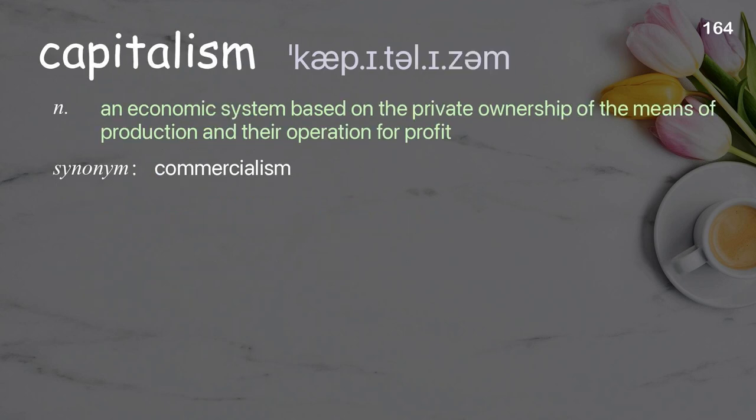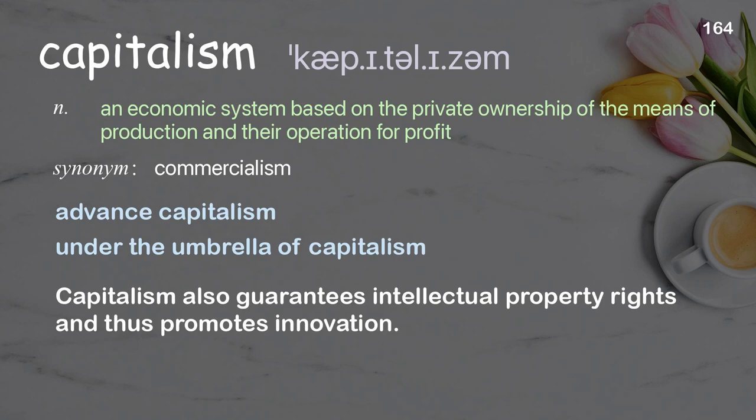Capitalism: an economic system based on the private ownership of the means of production and their operation for profit. Examples: advance capitalism, under the umbrella of capitalism. Capitalism also guarantees intellectual property rights and thus promotes innovation.